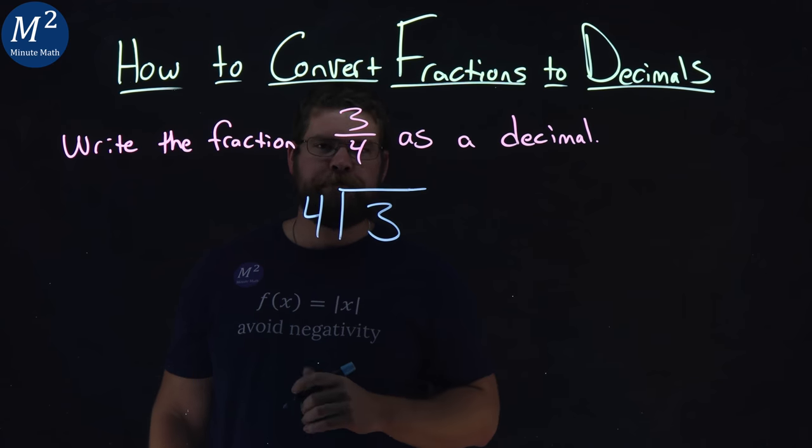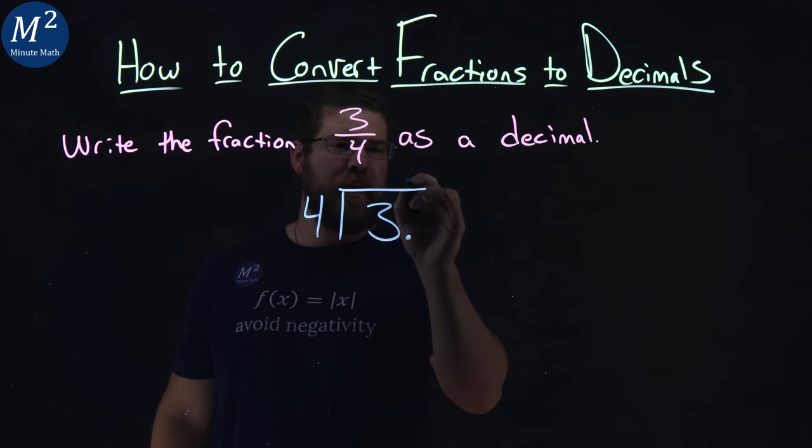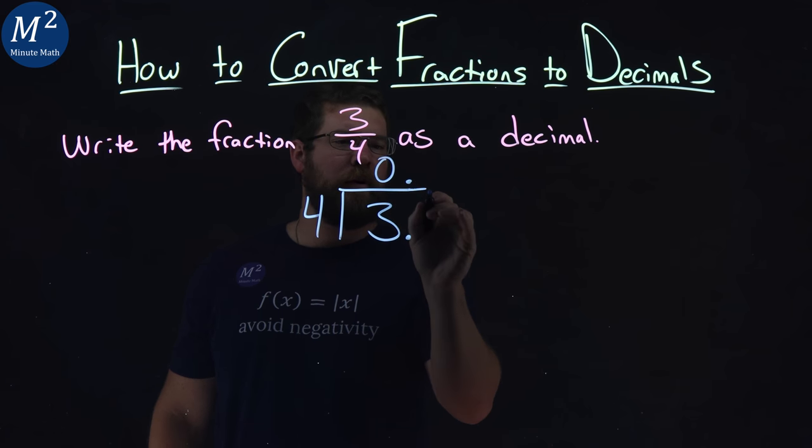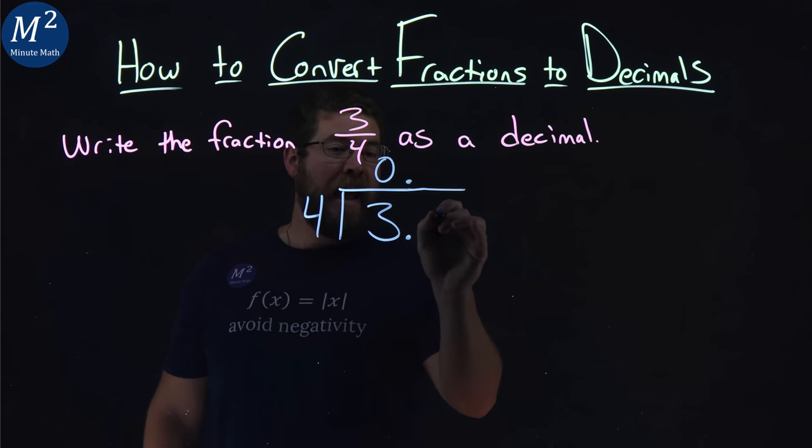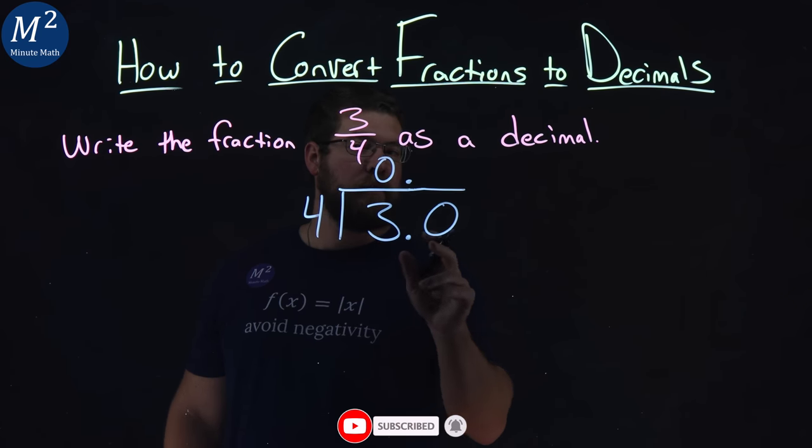Can four go into three? No, it can't. Alright, well, we then put a decimal place here, let's put a zero place value in front, and keep on going. We then want to add an extra zero, because 3.0 is the same thing, right?